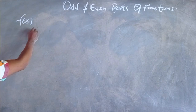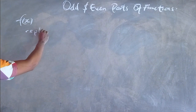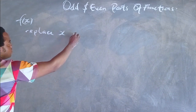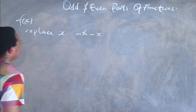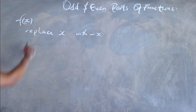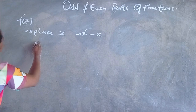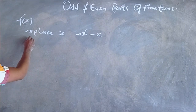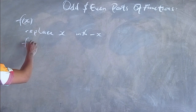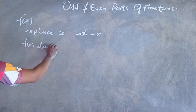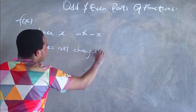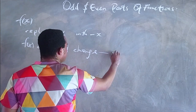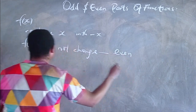What is an odd function? If you replace x with negative x in a function, and the function does not change, then that function is said to be even. I will repeat that: if you replace x with negative x in a function, and the function does not change, then the function is even.